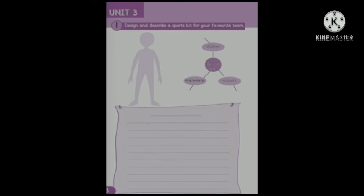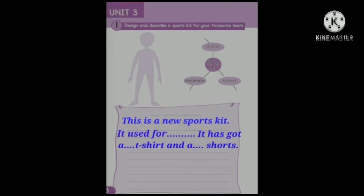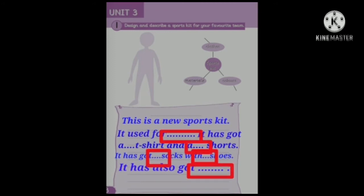Or you can think of any other title you like that you feel is suitable for your writing. Now, let's start writing the paragraph together: 'This is a new sports kit. It's used for... It has got a t-shirt and shorts. It has got socks with shoes. It has also got...' Here you have to write the colors and the materials you have chosen for your team. Go back to your chart and fill in the gaps.